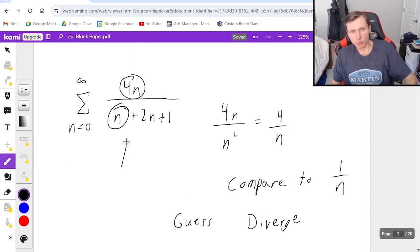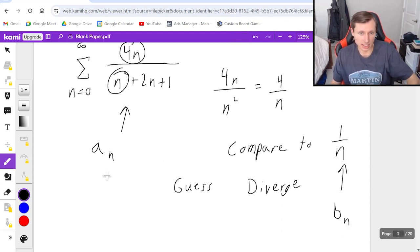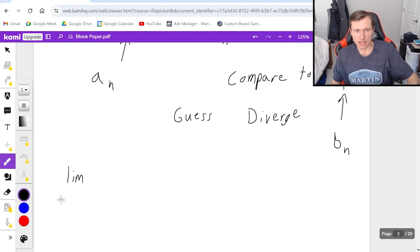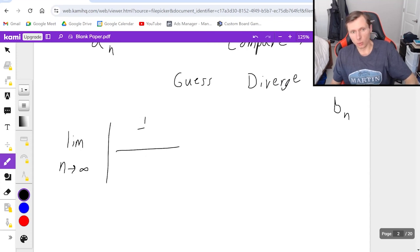So then a sub n was the original here. b sub n, the thing I'm comparing to, is 1 over n. So I'm going to do the limit as n goes to infinity of absolute value, not that that's super important, but whatever, of 1 over n divided by 4n over n squared plus 2n plus 1.